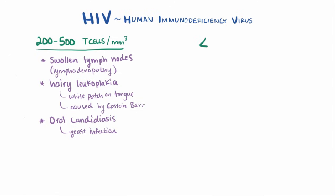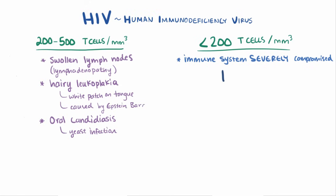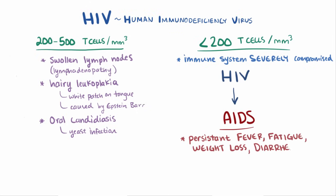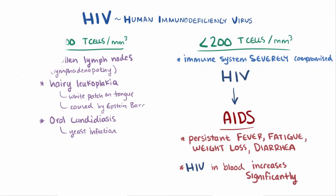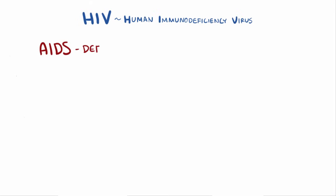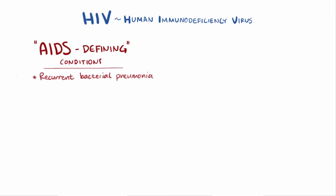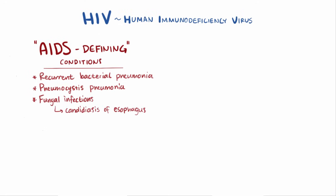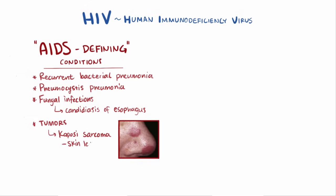As more T cells are lost and levels fall below 200 cells per cubic millimeter, the immune system becomes severely compromised, and at this stage the condition has progressed from HIV disease to AIDS. People experience persistent fever, fatigue, weight loss, and diarrhea, and the HIV count in the blood may increase significantly. Certain AIDS-defining conditions start to develop, such as recurrent bacterial pneumonia, pneumocystis pneumonia, and fungal infections like candidiasis of the esophagus. Other conditions include tumors and malignancies like Kaposi's sarcoma, which causes lesions on the skin and other soft tissue, and primary lymphoma of the brain.